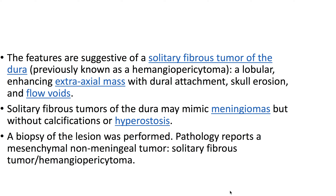The features are suggestive of a solitary fibrous tumor of the dura, previously known as hemangiopericytoma — a lobular enhancing extra-axial mass with dural attachments, skull erosion, and flow voids. Solitary fibrous tumors of the dura may mimic meningiomas but without calcifications or hyperostosis. A biopsy was performed; pathology reports a mesenchymal non-meningeal tumor: solitary fibrous tumor / hemangiopericytoma.